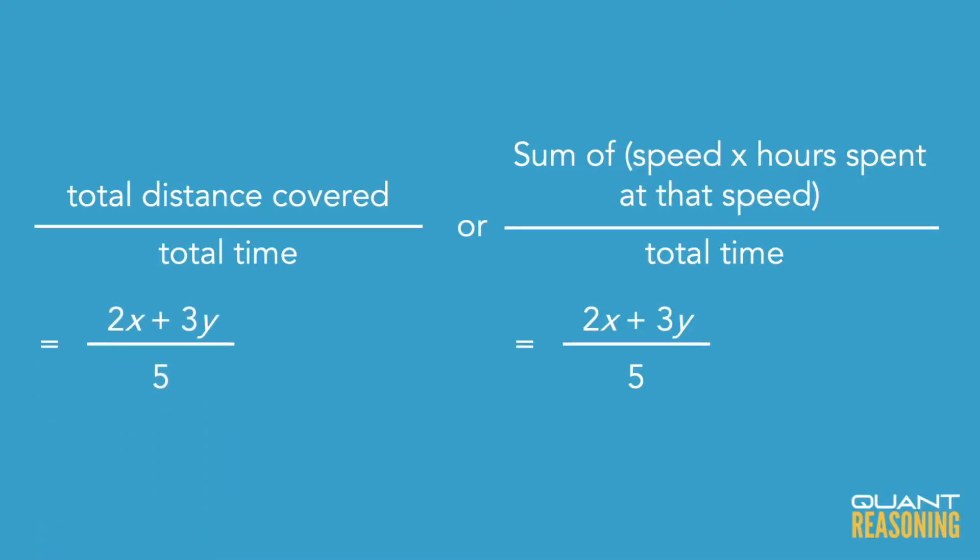You might notice that the two different approaches aren't really that different after all, because the total distance would be the sum of speed times number of hours at that speed, plus speed times number of hours at that speed, and so on. So really they're the same approach — just two different ways of looking at it.